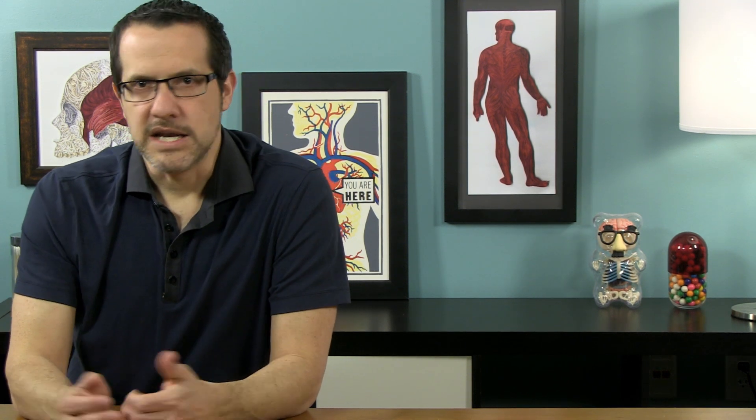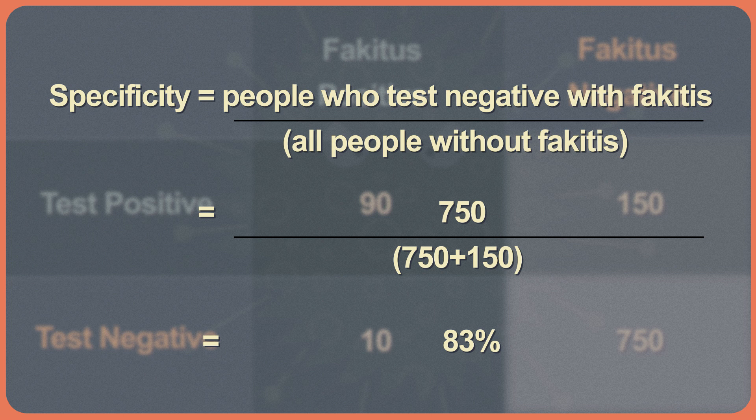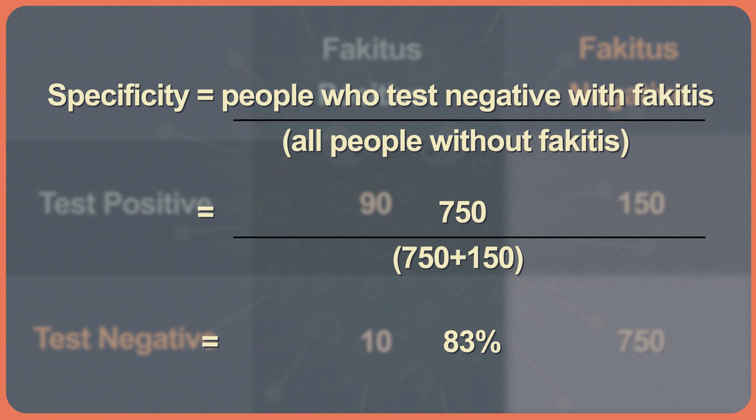Specificity is the proportion of people who don't have fake-itis who have a negative test. 900 people don't have fake-itis, and 750 of them have a negative test, so the specificity is 750 over 900, or 83%. In an ideal world both of these would be 100% — the higher the better — but that almost never, ever happens. So setting the threshold for a positive result at a white blood cell count of 15 led to a sensitivity of 90% and a specificity of 83%.